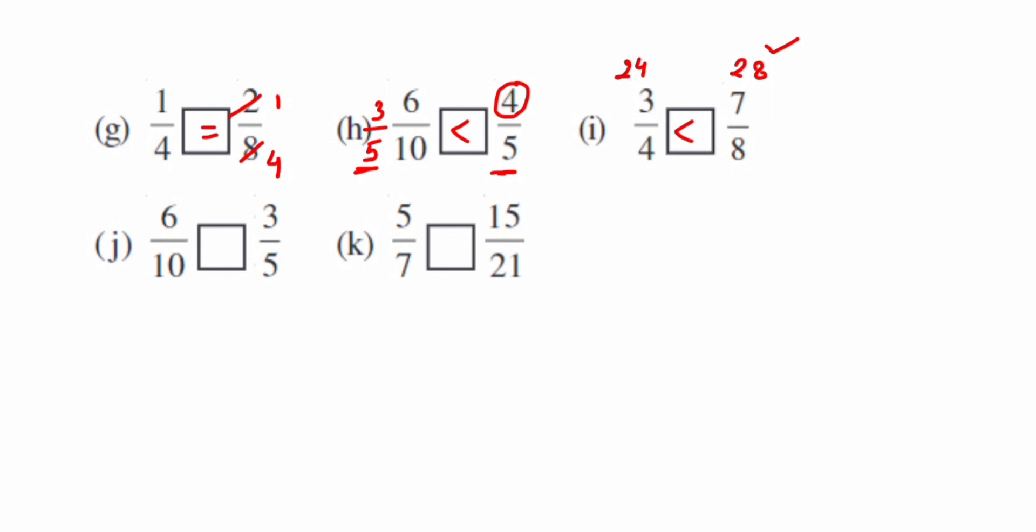Next we have 6 by 10, reduce it. We can cancel this in two table. 2 threes are 6 and 2 fives are 10, so we got 3 by 5 on left hand side. On the right side we have 3 by 5, so it will be equal.